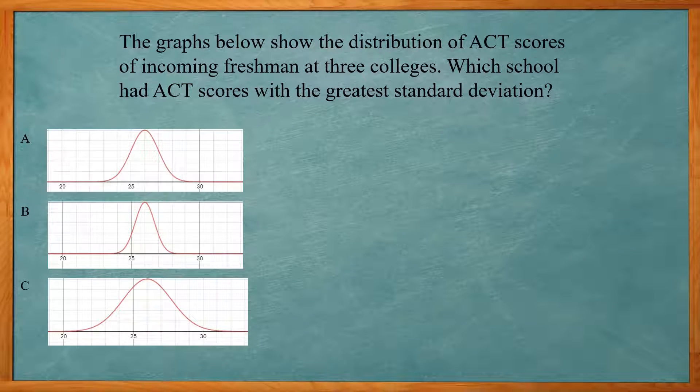So this one reads the graphs below show the distribution of ACT scores of incoming freshmen at three colleges. Which school had ACT scores with the greatest standard deviation? So remember that our standard deviation is how far the data points are spread out. So the narrower the graph, that means the points are closer together. And the wider the graph is means that data points are more spread out. So we can see here that the last one has a wider graph. So that's going to be our answer. The middle one is basically skinny. And then A is in between B and C. So C has the more varying data values that are more spread out.